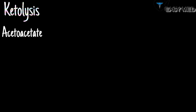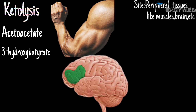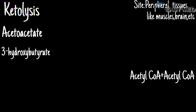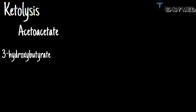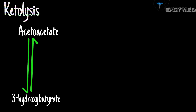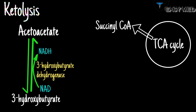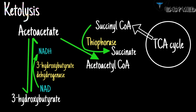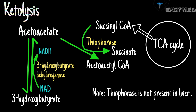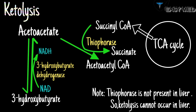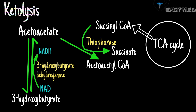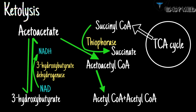Ketolysis is the breakdown of acetoacetate and 3-hydroxybutyrate in peripheral tissues such as muscle and brain, to convert them back into two molecules of acetyl-CoA. First, 3-hydroxybutyrate is oxidized back to acetoacetate by the same enzyme, 3-hydroxybutyrate dehydrogenase, also producing NADH. Acetoacetate then acquires coenzyme A from succinyl-CoA of the TCA cycle, and through the enzyme thiophorase, it converts into acetoacetyl-CoA. Note that thiophorase is not present in the liver, so the liver is not capable of conducting ketolysis. Acetoacetyl-CoA is then converted into two molecules of acetyl-CoA, completing ketolysis.